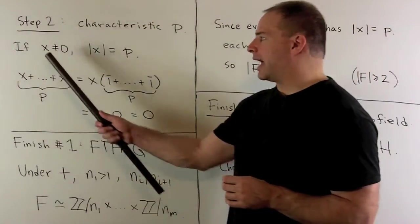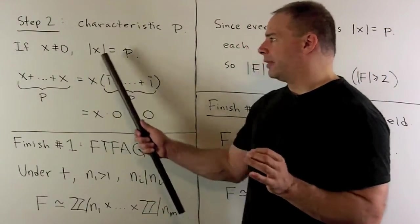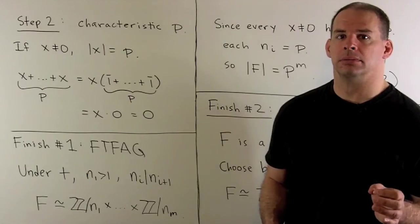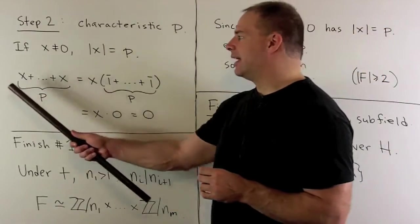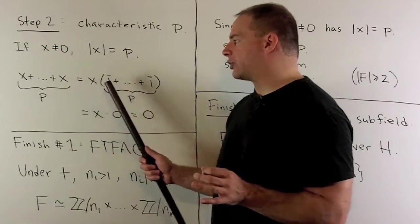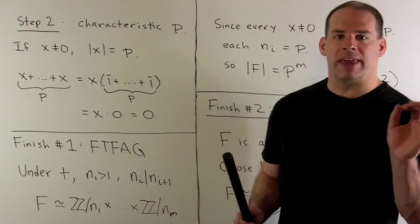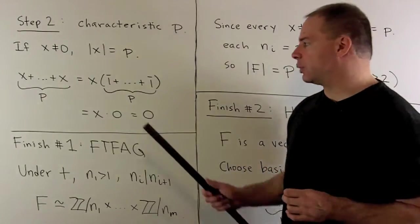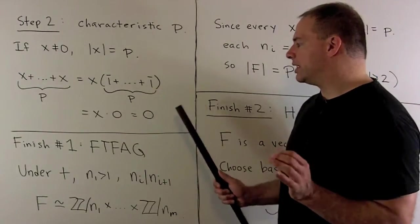Now, another way to say that, if x is not equal to zero, then the order of x under addition is equal to p. So, take x, add it to itself p times. I could factor out an x. It's going to leave me with x times one bar plus itself p times, and we know that that's equal to zero.